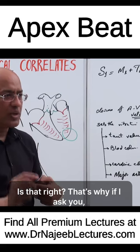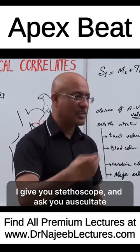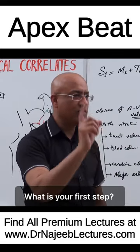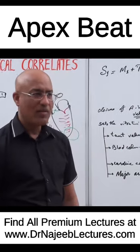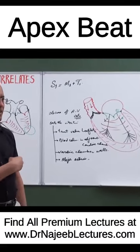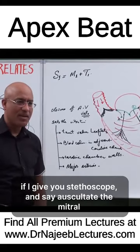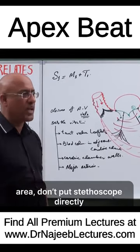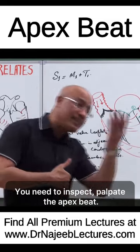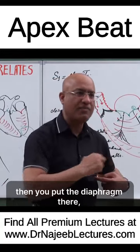That is why if I give you a stethoscope and ask you to auscultate the mitral area, don't put the stethoscope directly, because you don't know where the apex beat is. You need to inspect and palpate the apex beat first. Once you find where the apex beat is, then you put the diaphragm there.